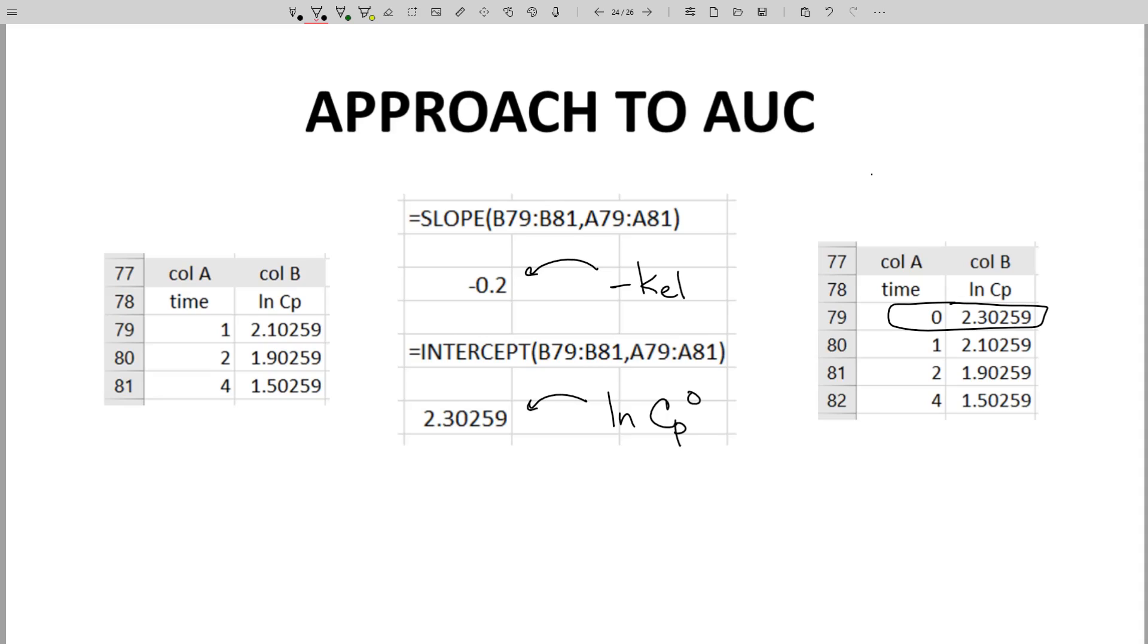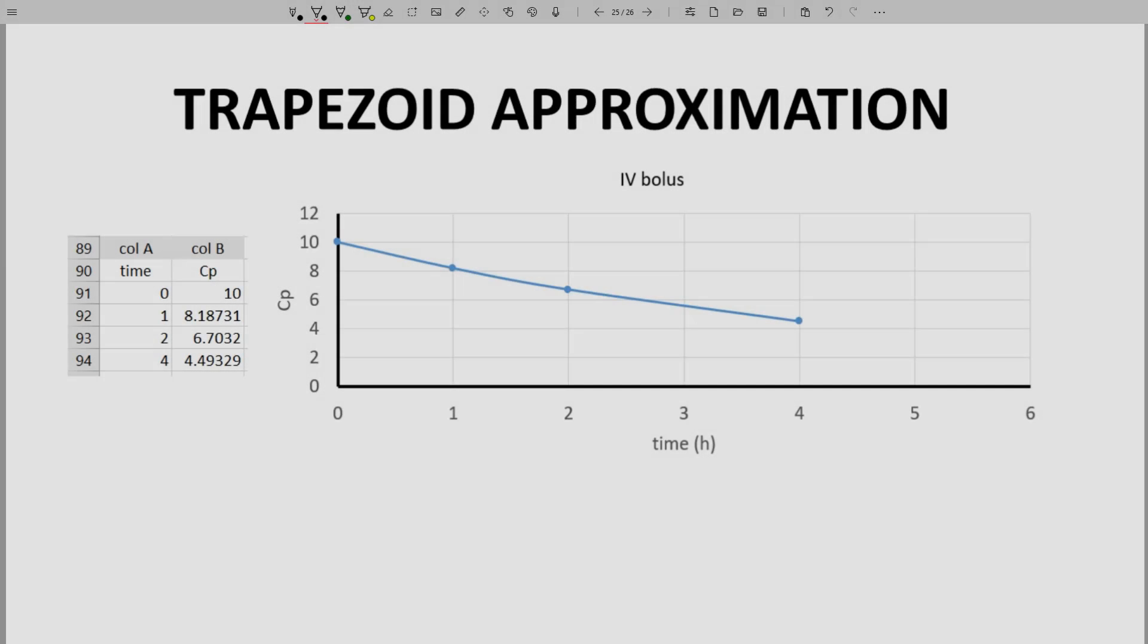Let's finish this with the trapezoid approximation to get AUC area under curve. Here is a table with our CP time points with a graph. Note that we now have four points, and this is CP, not natural log CP.